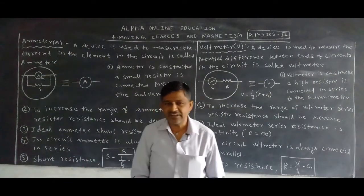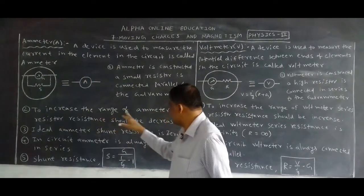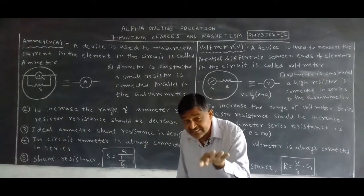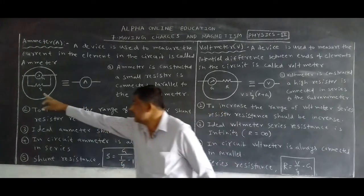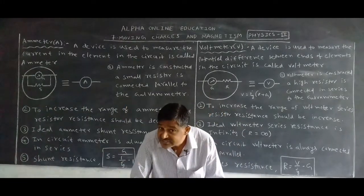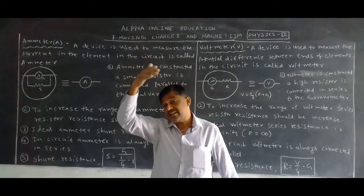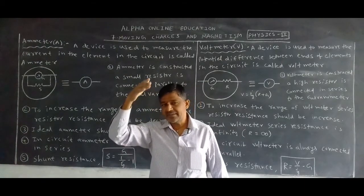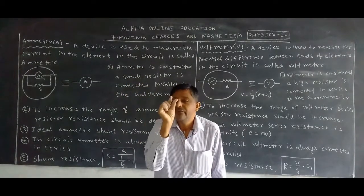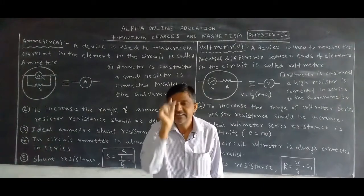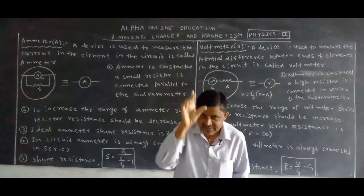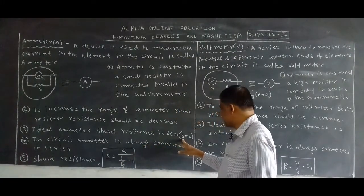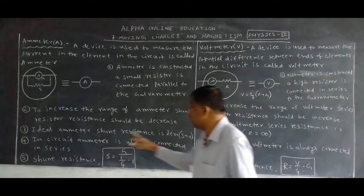To increase the range of the ammeter — from 1 ampere, 2 amperes, 10 amperes, 100 amperes — the shunt resistor resistance should be decreased. When the small r value is decreased, the current value, meaning the range, is increased. If the shunt resistor resistance is 0, it is called an ideal ammeter.